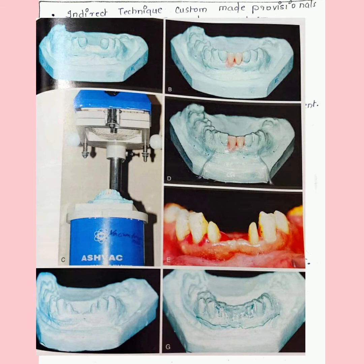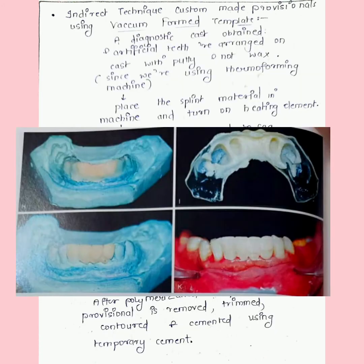We get a template. You see in image E, tooth preparation is being done, and the cast is poured of the prepared abutment teeth. This template is adapted over this cast with the prepared teeth to check the fit. Artificial teeth are removed and the template is filled with provisional acrylic resin material and positioned on the cast. This template is secured with the cast using rubber bands. After polymerization is complete, the provisional we got is removed, trimmed, contoured, and cemented using a temporary cement.